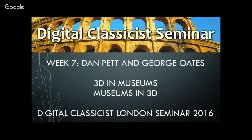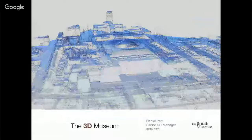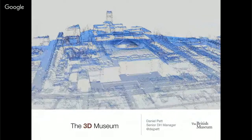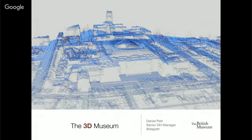Some people have inspired me in this room today — Addy in the front row and George sitting next to me. 3D is something we've gone on a little journey with at the British Museum. The very first slide I'm going to show you is a 3D point cloud of the museum taken from LiDAR data. We're now working out how we can start using 3D for the museum in different ways.